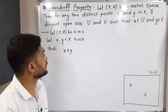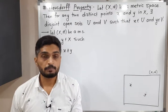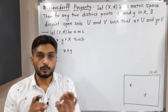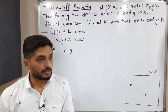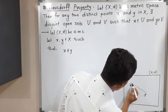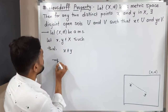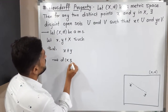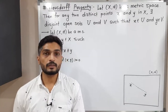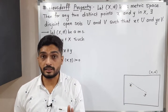We start with the given information: (X, d) is a metric space, and x, y ∈ X are distinct points, so x ≠ y. Since these points are distinct, there is some non-zero distance between them. Therefore d(x, y) > 0.